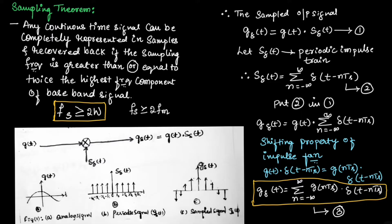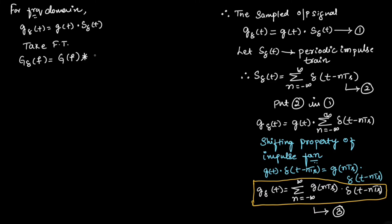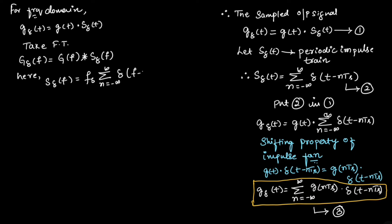For the frequency domain, let us consider G_delta(t) equal to G(t) multiplied by S_delta(t). Taking the Fourier transform on both sides, we get G_delta(f) equal to G(f) convolved with S_delta(f), since multiplication in the time domain corresponds to convolution in the frequency domain. Here, S_delta(f) equals fs times the summation from n equals minus infinity to infinity of delta(f minus n*fs) — equation 5.